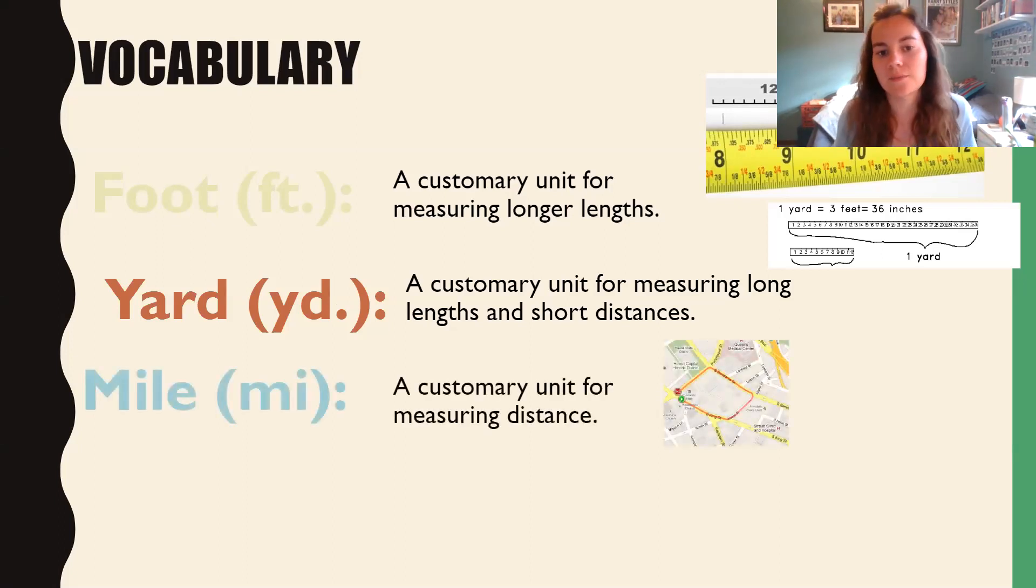A mile is a customary unit for measuring distance. I can't show you a mile in my hands. It's way too big. But down here we have that picture. Remember that goes all the way around a block. And that is one mile. And we use miles to measure the distance you might drive or bike or even walk.